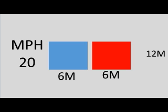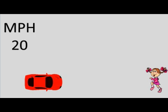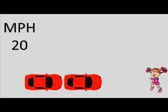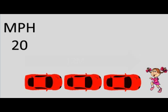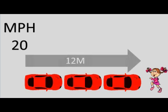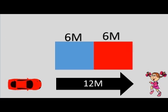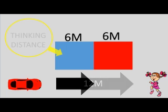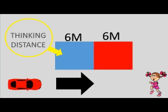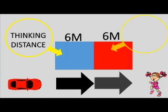Let's look at an example. Imagine you're driving the red car at 20 miles an hour and a small child runs out in front of you. Your car will travel for three car lengths before it stops, which is the equivalent of 12 meters — the overall stopping distance. The 12 meters is made up of the blue part, which is your thinking distance, and the red part, which is your braking distance.